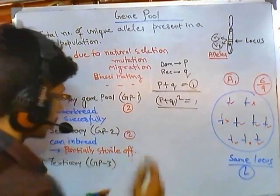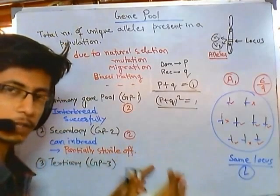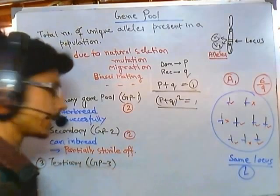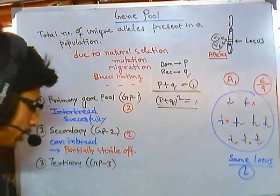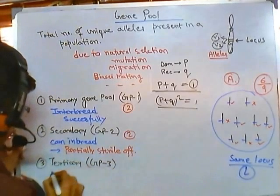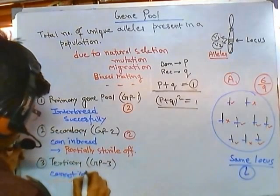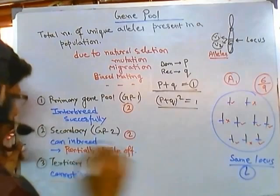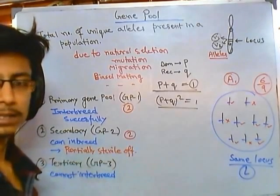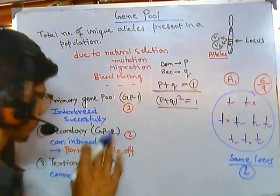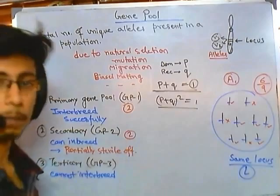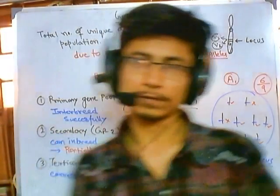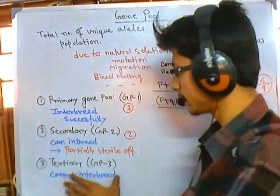In the tertiary type of gene pool (GP3), non-disjunction of chromosomes during cell division does not occur properly. The member populations cannot interbreed — interbreeding is not possible between tertiary gene pool members — and as a result there is no way for offspring to develop naturally.